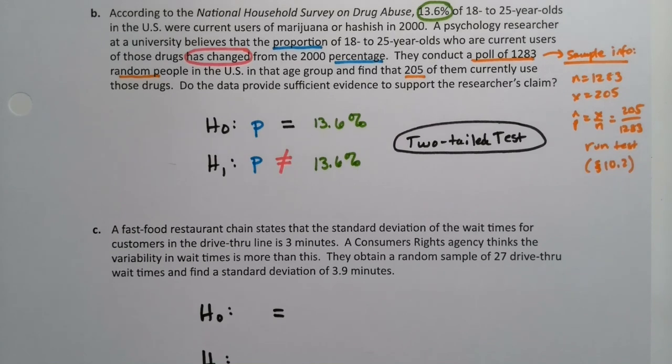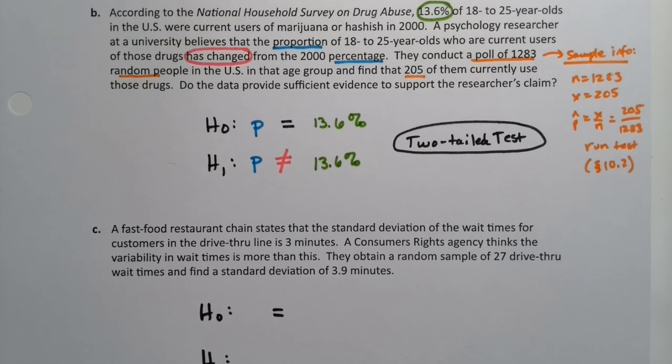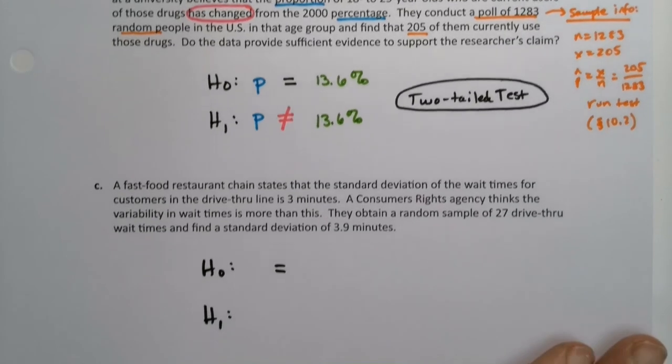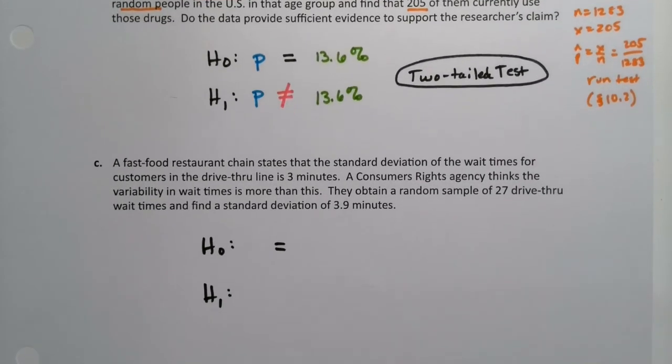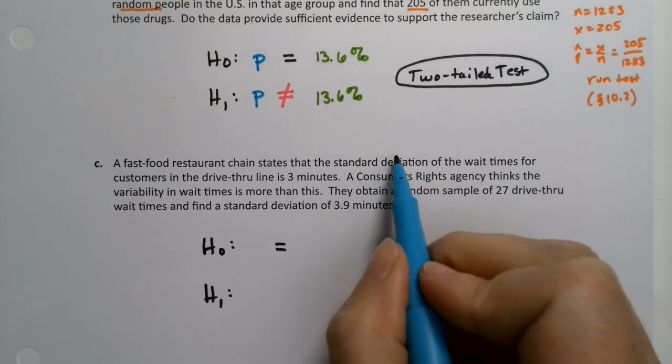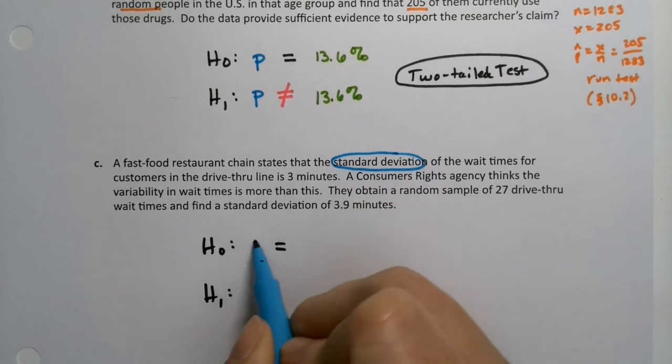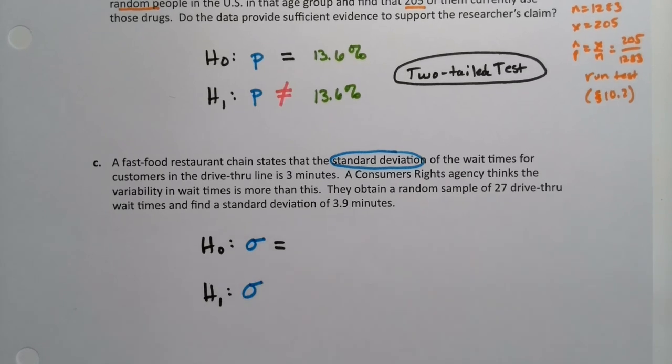All right. Last but not least, a fast food chain states the standard deviation of the wait times for customers in the drive-thru line is three minutes. A consumer's agency thinks that the variability in wait times is more than this. They obtain a random sample of 27 drive-thru wait times and find a standard deviation of 3.9. Okay. So it's pretty obviously the standard deviation is the value that's assumed, which is sigma. And again, these are not tests we're going to run because they're from section 10.4. However, it's valuable to know how to set them up because the setup doesn't change, even though this is not a particular test for us to run.